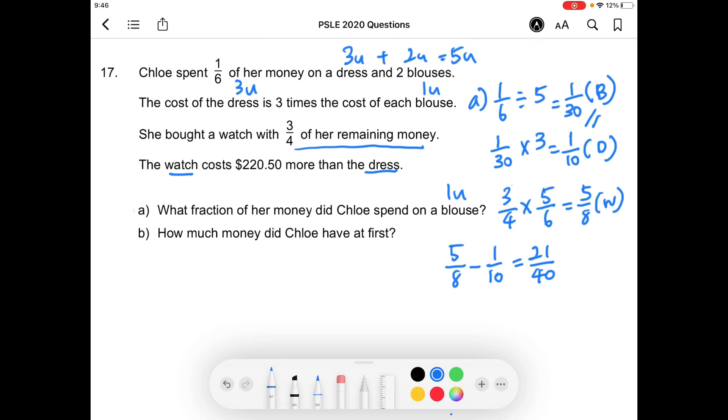With that, we can solve part B of the question. How much money did Chloe have at first? We're going to take $220.50 divided by twenty-one to find out what's one unit, and then we multiply forty, which is what she has in total in terms of units. That will give us $420 as our answer for part B.